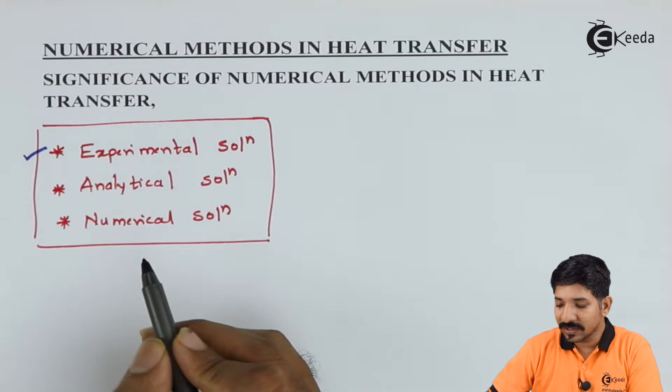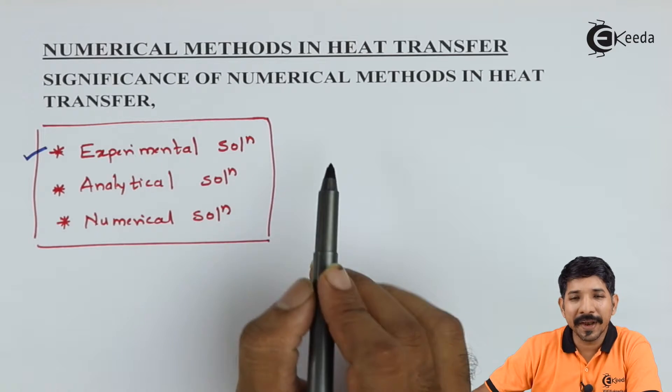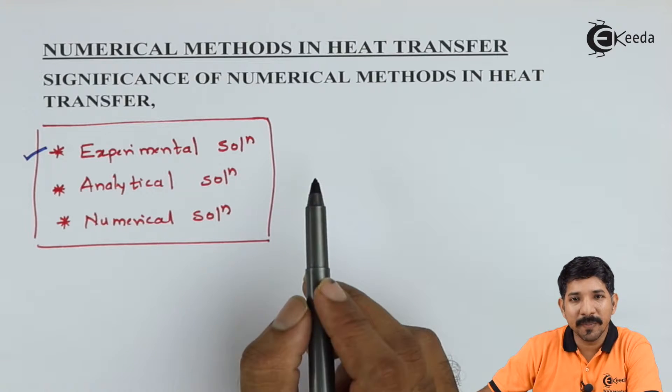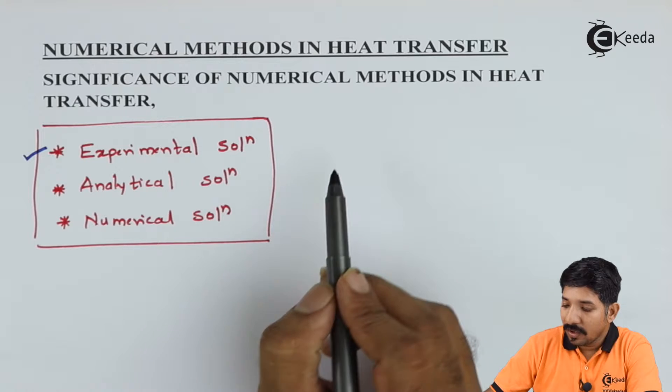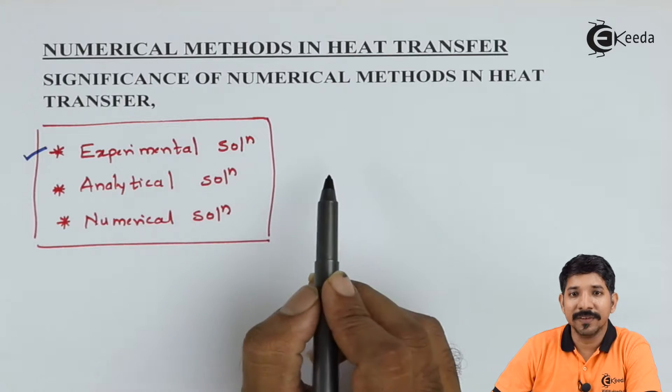One is experimental solution, wherein you will do a certain experiment and at the end of the experiment, you will conclude and you will get some solution. You will get the unknown variables.